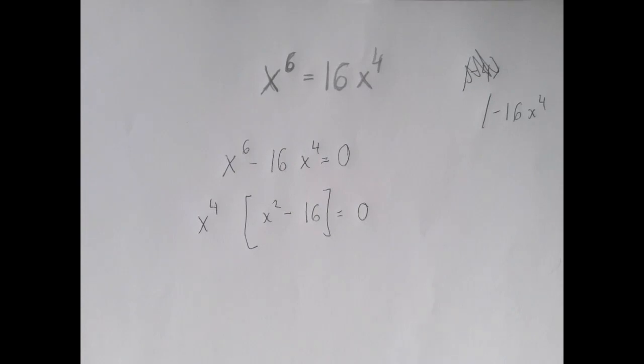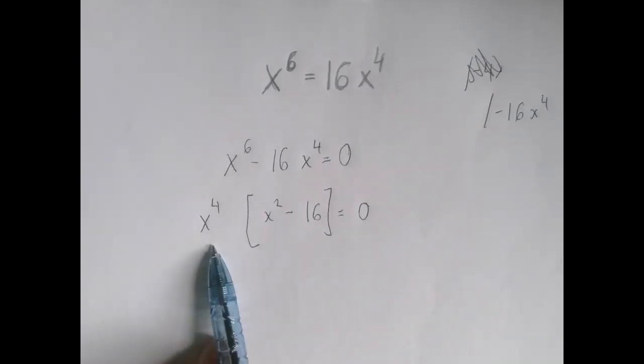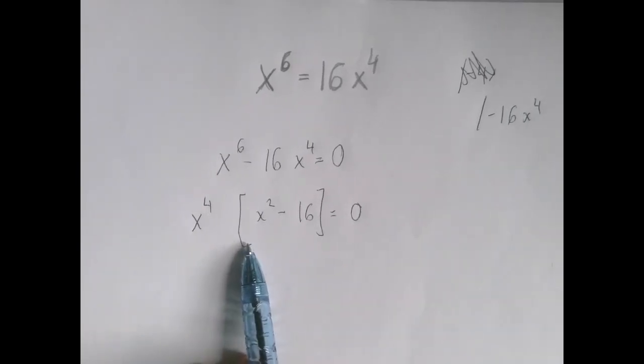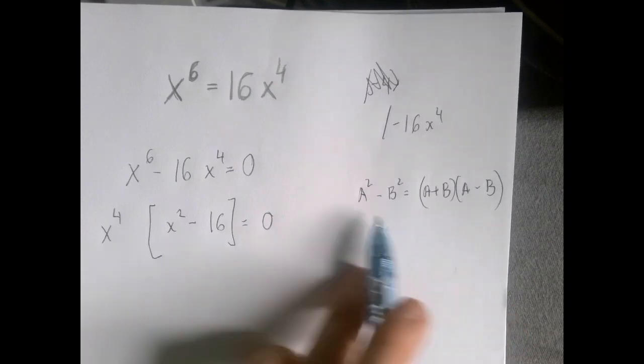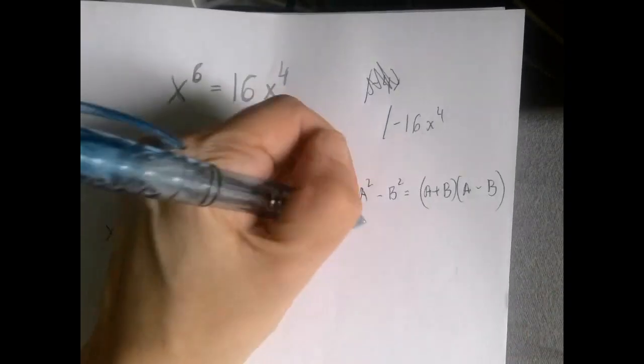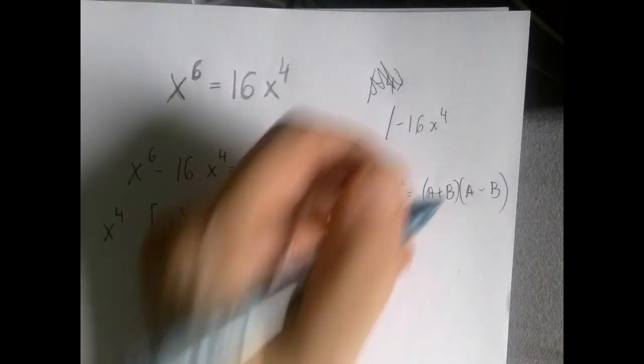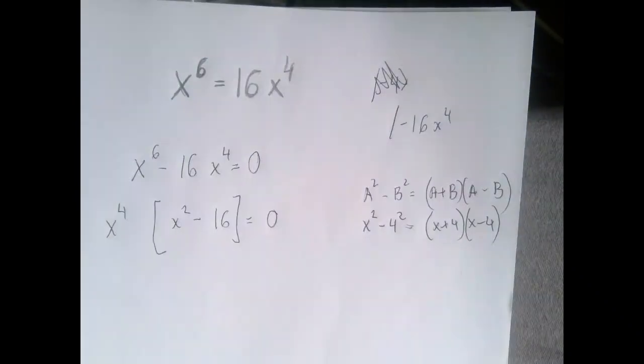When we factor out the greatest common factor, we get x^4 times (x^2 - 16). This second factor can be further factored via the difference of square theorem. According to the difference of square theorem, x^2 - 4^2 will be factored into a pair of conjugates, (x + 4) and (x - 4).